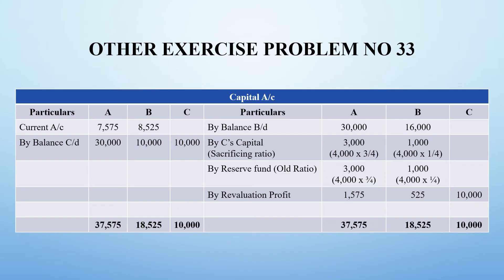After adding all adjustments on the credit side, the required capital values are 30,000 for A, 10,000 for B, and 10,000 for C. The grand total on the credit side is 37,575 rupees for A. Since the required capital is 30,000, the excess amount of 7,575 rupees is transferred to A's current account on the debit side.